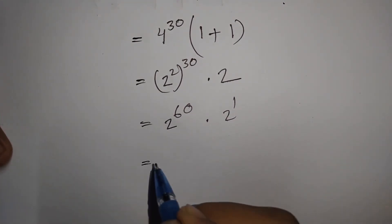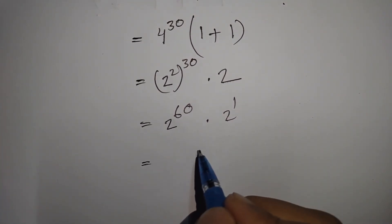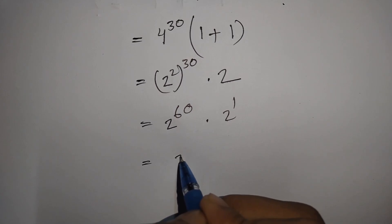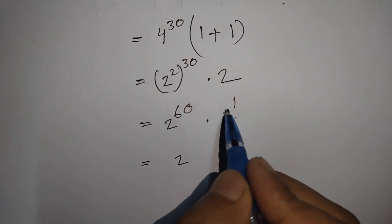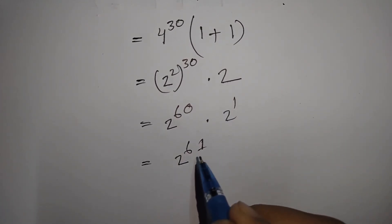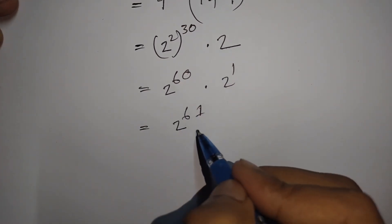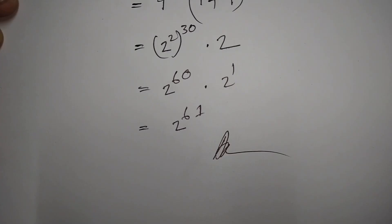Since 2^60 and 2^1 have the same base but different powers, we can write 2^(60+1) = 2^61. So 2^61 is the final answer.